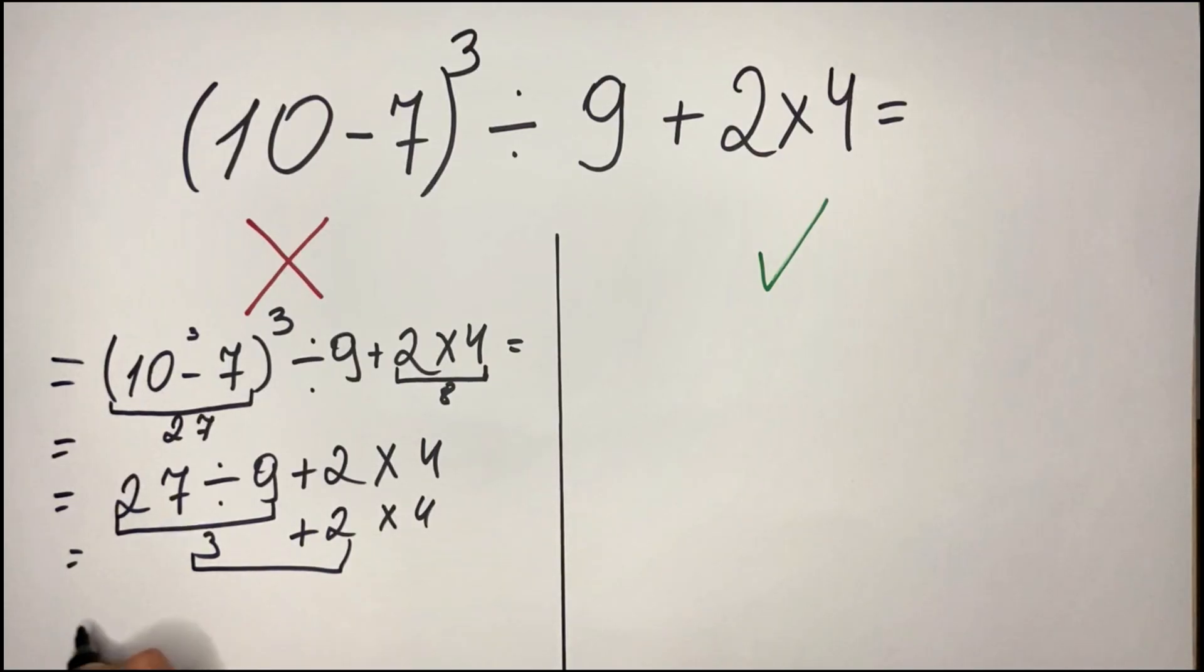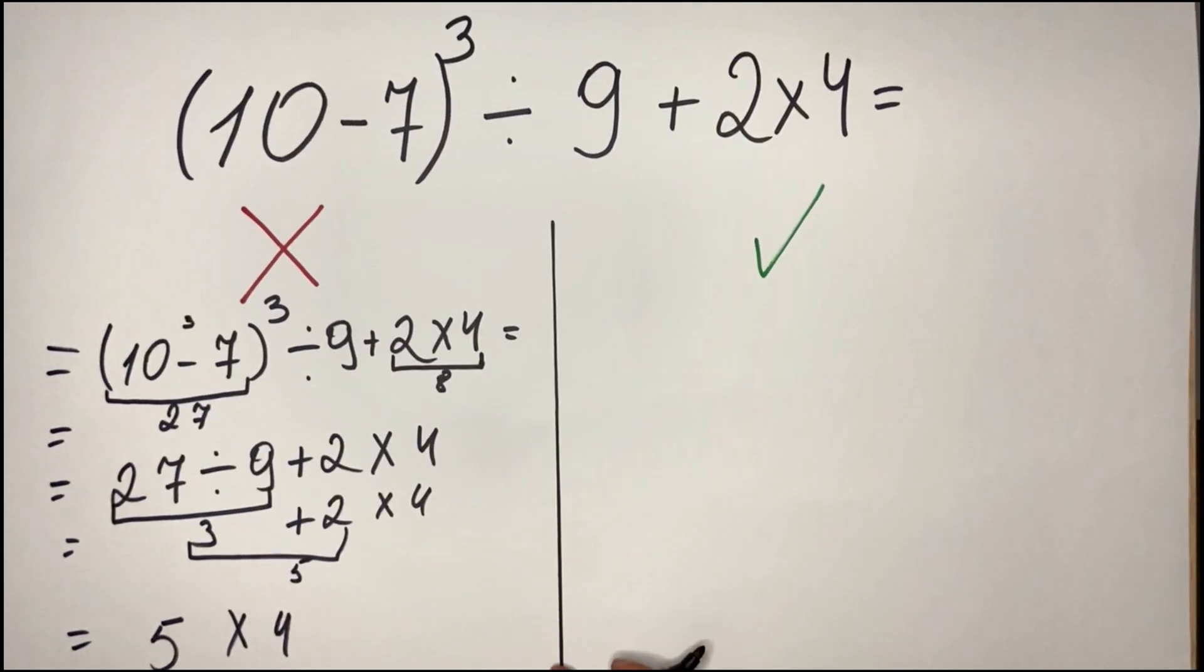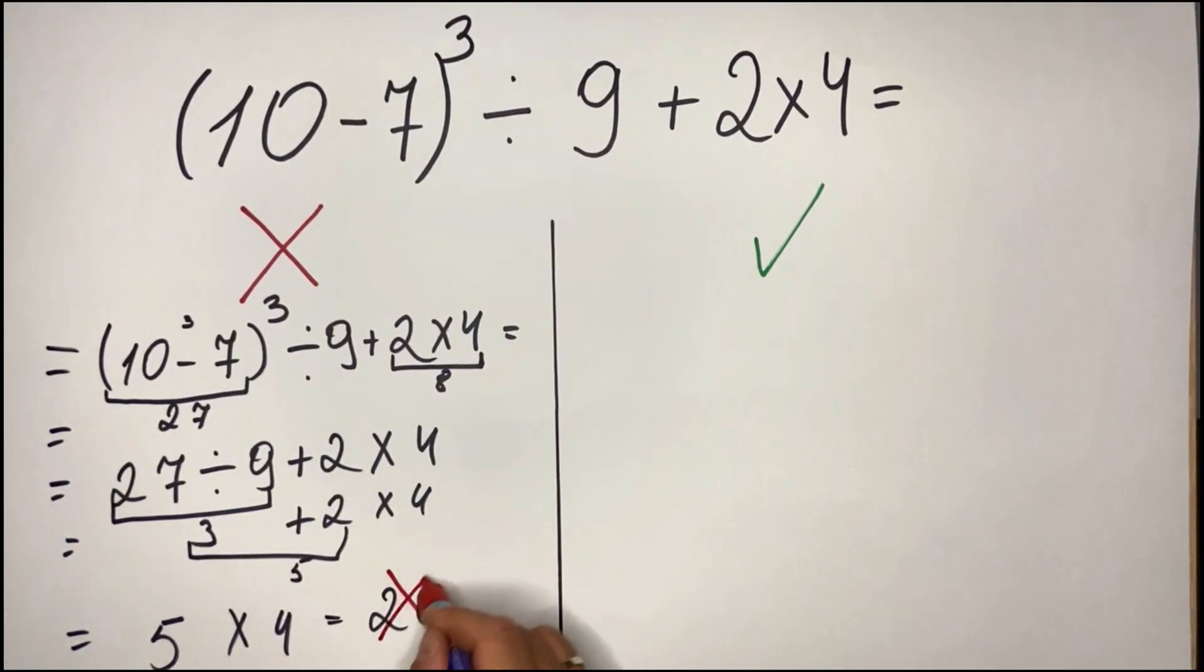So in this case what they get, this is 5, so they think okay well we have 5 multiplied by 4, and they get 20. And of course this is completely wrong.